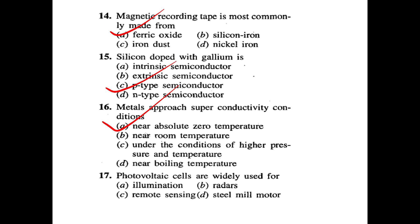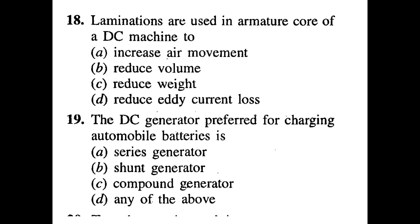Photo cells are widely used for — illumination, radar, remote sensors, or steel mill motors? Answer: mainly used for illumination. Laminations are used in the armature core of a DC machine to increase air movement, reduce volume, reduce weight, or reduce eddy current losses? Answer: to reduce eddy current losses. A DC generator preferred for charging automobile batteries is — series, shunt, or any of the above? Answer: shunt generator.